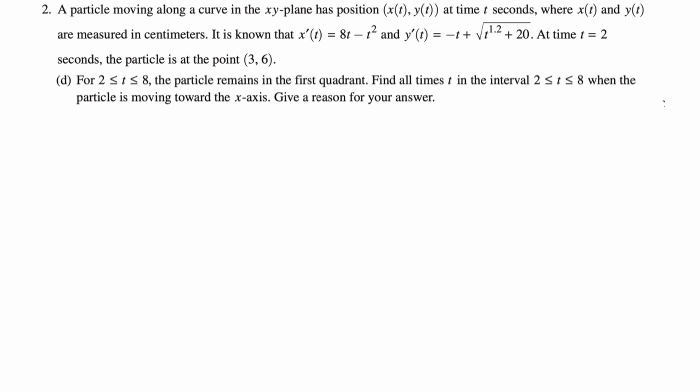Let's take a look at the next part. Part (d): For 2 ≤ t ≤ 8, the particle remains in the first quadrant. Find all times t in the interval 2 ≤ t ≤ 8 when the particle is moving toward the x-axis. Give a reason for your answer. So I'm going to think this out. If you're in the first quadrant, you know that y > 0. You want to be moving toward the x-axis, which is moving down. To move down, you need dy/dt or y' to be less than 0. So we're just looking for where y' is less than 0.